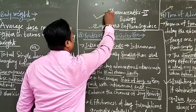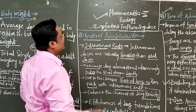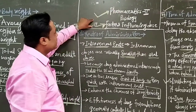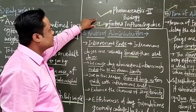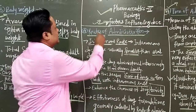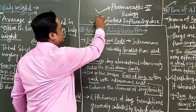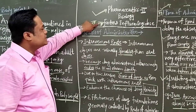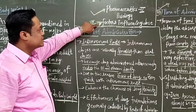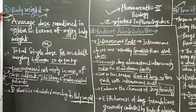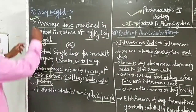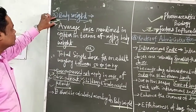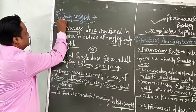The subject is Pharmacics 2, Chapter 3 is Sociology, and the subchapter is Factors Influencing the Dose of Drugs. In the last lecture we covered two factors: first is age and second is sex. In this lecture we will see the third factor influencing the dose of drugs, which is body weight.